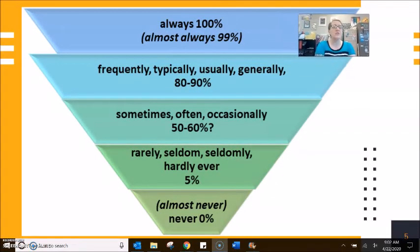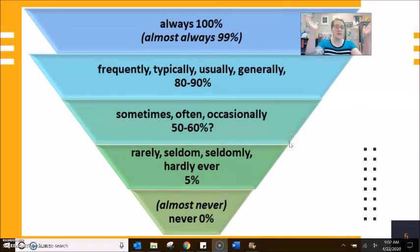Often with adverbs of frequency, we are thinking about this idea of percentage, of how much. And I don't know what happened with my triangle here. I could not get the triangle to match. Always having that feeling of 100%. Almost always, you know, 99. We could argue a lot about these words in between, frequently, typically, usually, generally. For me, they are 80 to 90. Maybe for another person, they are 70 or 95.